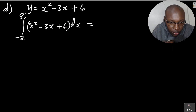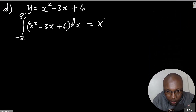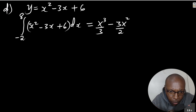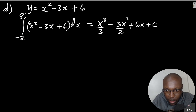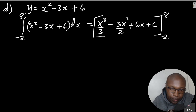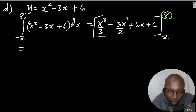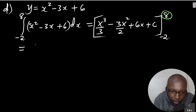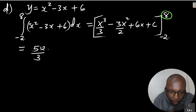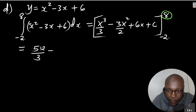Integrating x² - 3x + 6: x² integrates to x³/3, 3x integrates to 3x²/2, and 6 integrates to 6x. The result is [x³/3 - 3x²/2 + 6x] evaluated from -2 to 8. Substituting x = 8: 8³/3 = 512/3, minus 3(64)/2 = 192/2 = 96, plus 6(8) = 48.